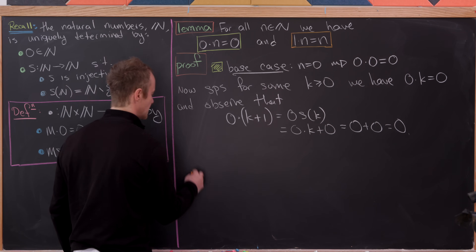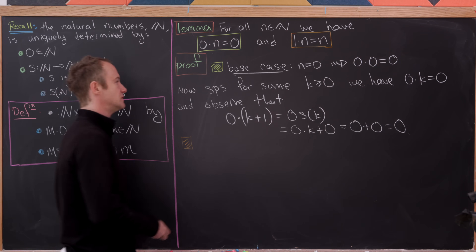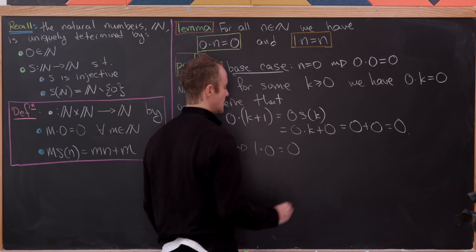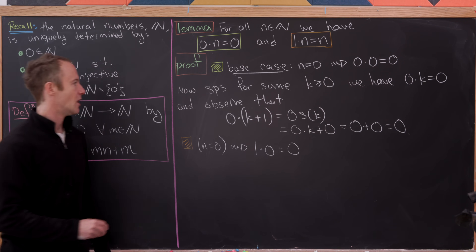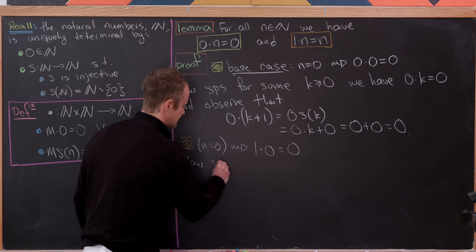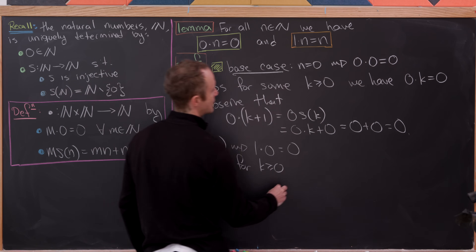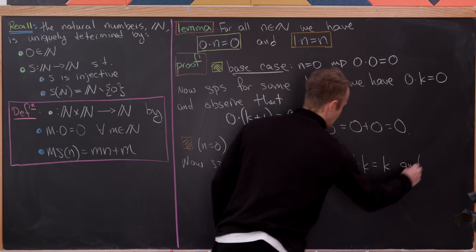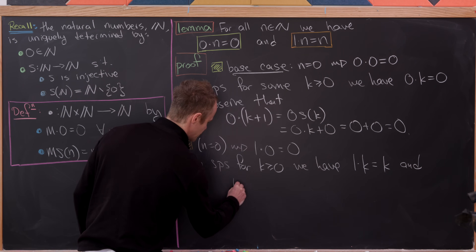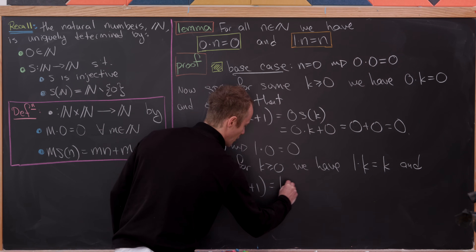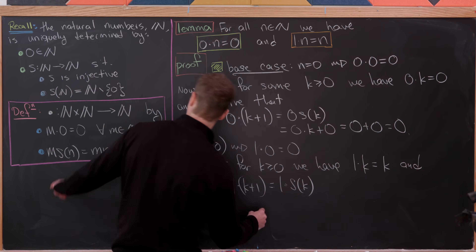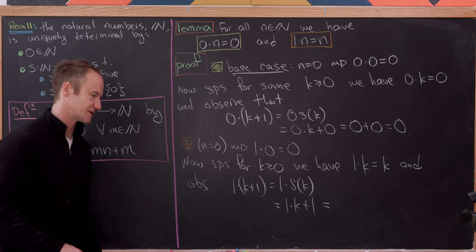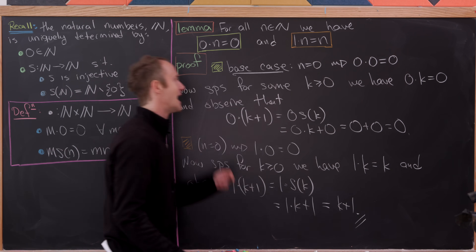Now let's move on to left multiplication by 1. We're going to again do this by induction, starting with n equals 0. If n equals 0, we have 1 times 0 equals 0, which is what we need. For the induction step, suppose for some k ≥ 0 that 1 times k equals k. Then observe that 1 times (k+1) equals 1 times the successor of k, which by our recursive definition equals 1 times k plus 1. Since 1 times k equals k, that's simply k plus 1 as needed.